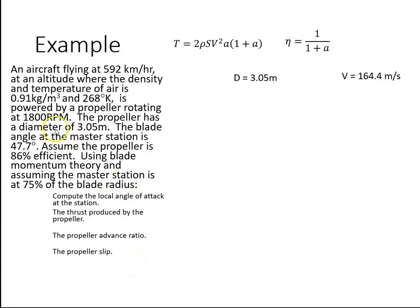We're given that the diameter of the propeller is 3.05 metres and the velocity of the aircraft is 592 kilometres an hour, which equates to 164.4 metres per second. If I have the diameter, then I can get the area of the disc: that's just πr², which works out to be 7.3 metres squared.